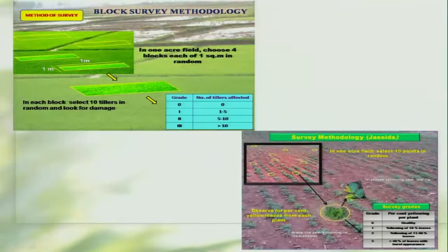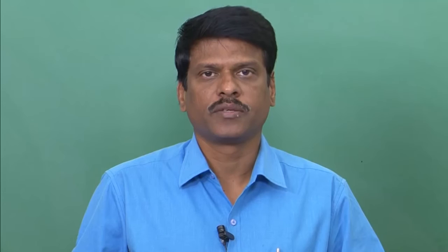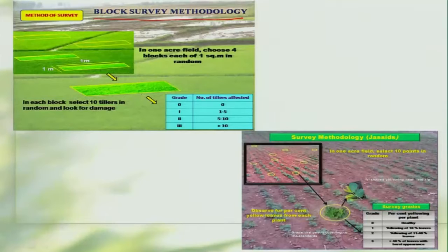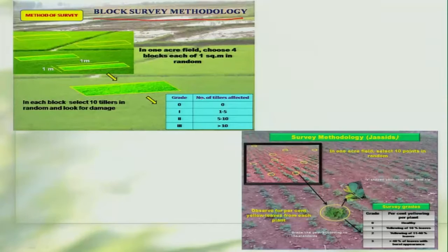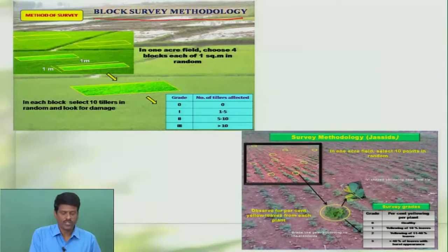In either a roving survey or a fixed plot survey, how exactly are we going to do the sampling? The sampling of the insect or pest population depends on the type of damage they are going to cause and whether we are looking at an absolute count of the pest or looking at damaged plant parts. There are two methods: the block survey methodology, where over an area we select certain blocks of a fixed area, say one by one meter, and count the number of healthy and affected plants, expressed as number or percent plants affected, done over a known area such as one hectare. The second method is the point survey.